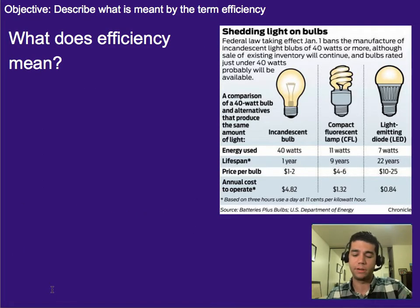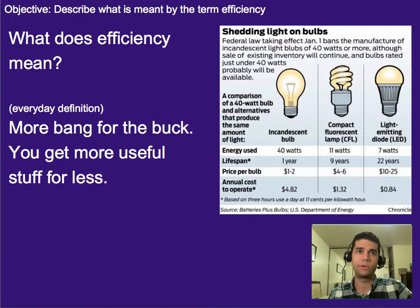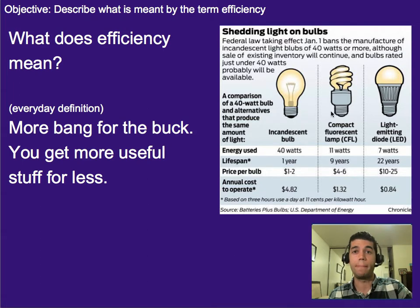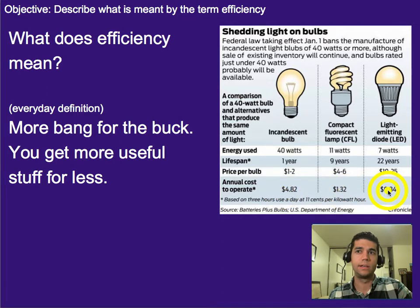So what does efficiency mean? In general everyday language, efficiency means more bang for your buck. That means if it's a car, you're going to get more miles per gallon. If it's a light bulb, you're going to get more light or a longer amount of light for the same cost. So if you look at annual cost to operate, it costs less money to operate this one at the same brightness and get the same amount of light from it.